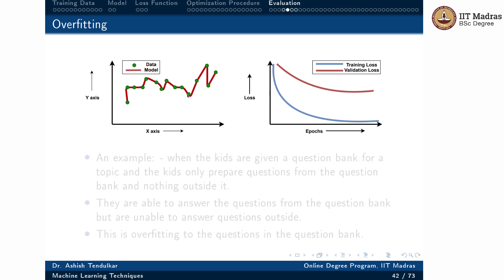In the learning curve for an overfitting model, both training and validation losses start high due to random initialization. After some iterations, training loss comes down and so does validation loss. But after a point, training loss continues to reduce while validation loss stops reducing and goes in the upward direction. If this is happening, the model is overfitting.